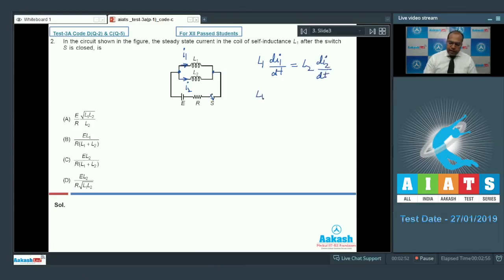So I can say that L1 into dI1 by dT is equal to L2 into dI2 by dT. Or I can say that L1 into dI1 is equal to L2 into dI2. Or if I integrate, L1 into I1 is equal to L2 into I2. So from here we get the relation that I is inversely proportional to L.